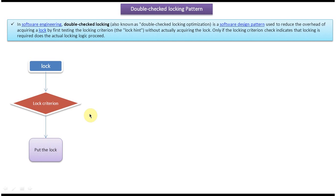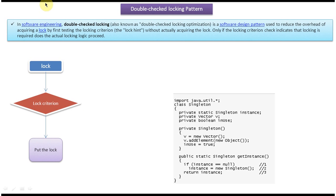We will see why the double-checked locking design pattern is needed. Here you can see a singleton class. As per the singleton design pattern, the object should be created only once. We should not allow the object to be created by a constructor, so we make the constructor private. From other objects we can't create a singleton object using the constructor. We provide a getInstance method, and what we do is check if instance equals null, then create the instance and return it. If instance is not null, then return the existing instance stored in the static singleton variable.